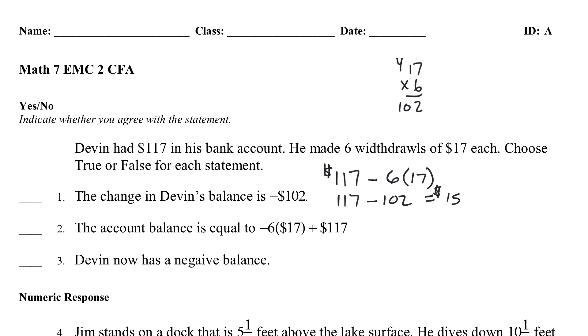So, we have the full idea here. The change in Devin's balance is negative $102. Yes. It changed by $102 in the negative direction. It went down. So, that would be true, right? True.